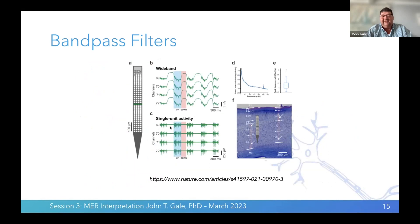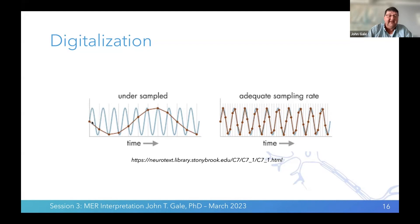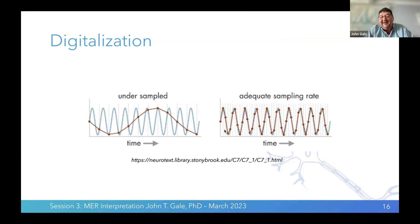When sampling digitally, we need to sample quickly enough to actually see the frequencies of interest. Here's an example of a sine wave that's fairly fast — every dot is when the acquisition system took a sample. In this example, we were sampling too slowly, so instead of seeing the true wave, we see a derivation that looks like a much slower sine wave. There's Nyquist theory, which says we need to sample at least 2.5 times the fastest frequency.